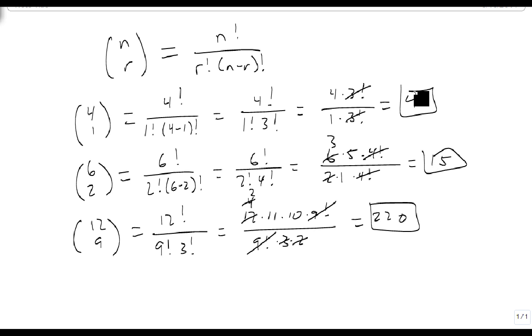This is how we use n choose r. This says if I have 12 objects in a bag and I choose 9 of them, there are 220 possible combinations that I could get from that. Different combinations.